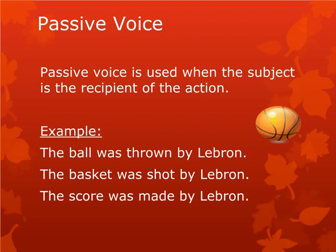The presence of a 'be' verb, however, does not necessarily mean that the sentence is in passive voice. Another way to recognize passive voice sentences is that they may include a 'by the' phrase after the verb. The agent performing the action, if named, is the object of the preposition in this phrase. You can recognize passive voice because the verb phrase will include a form of 'be' — was, am, are, been, is. Don't assume that just because there is a form of 'be' that the sentence is passive. Sometimes a prepositional phrase like 'by the' indicates that the action is performed on the subject, and that the sentence is passive. Examples: the ball was thrown by LeBron. The basket was shot by LeBron. The score was made by LeBron.